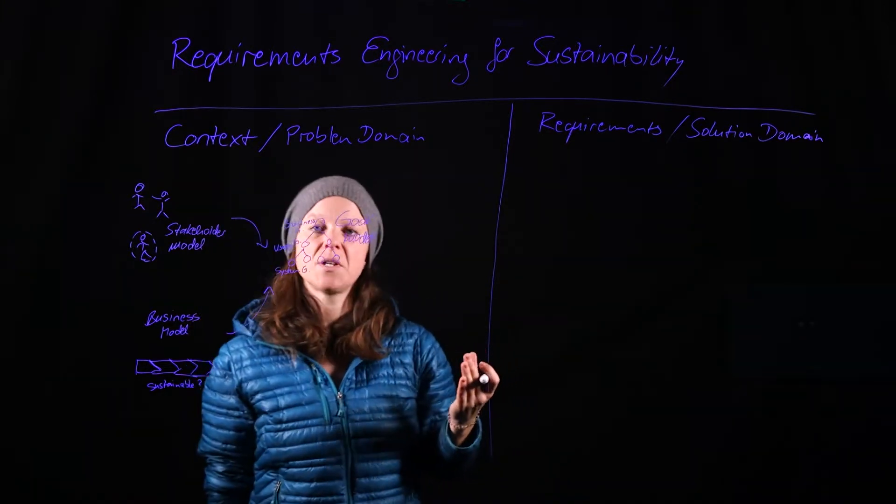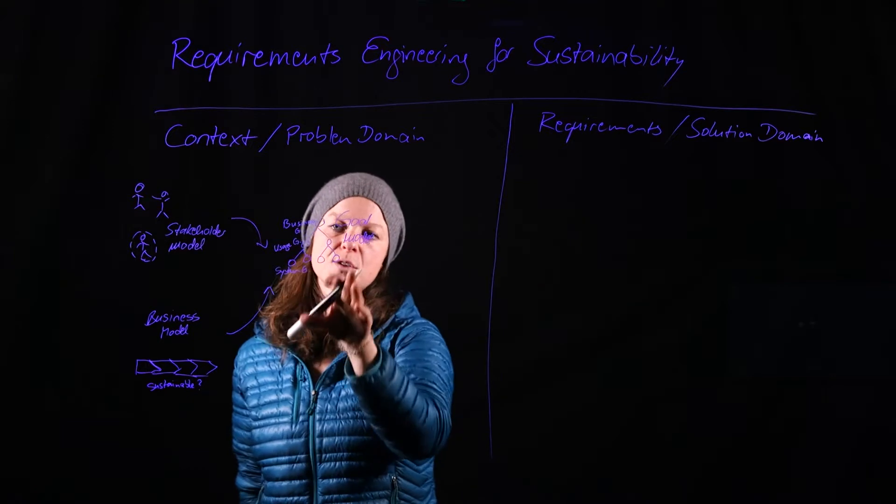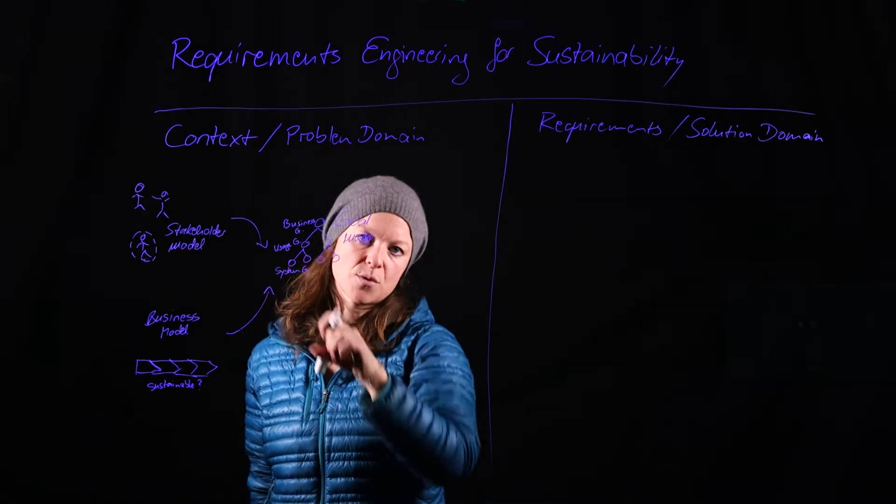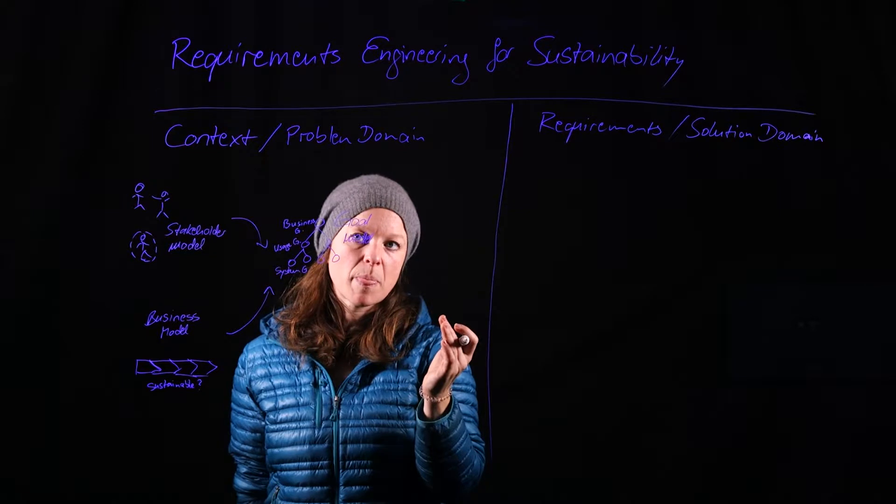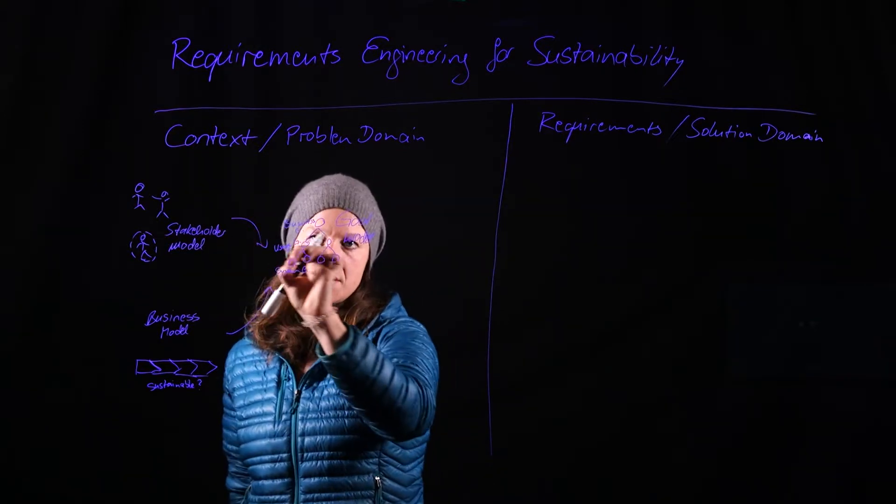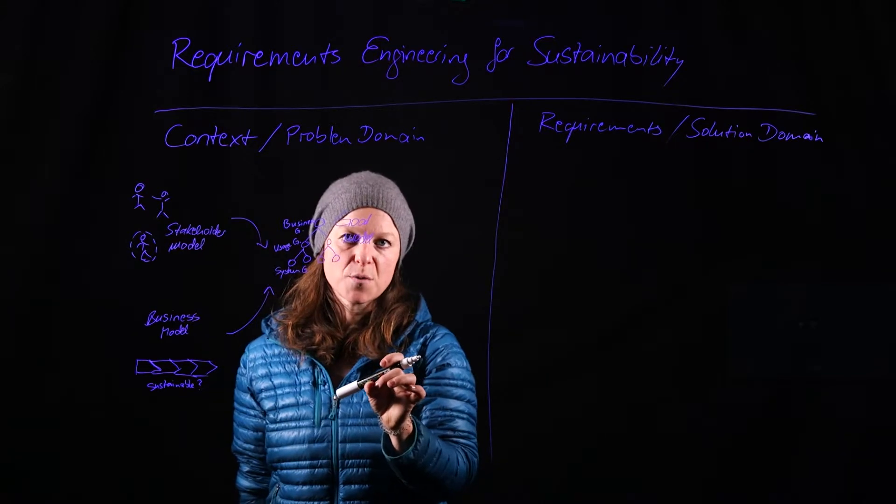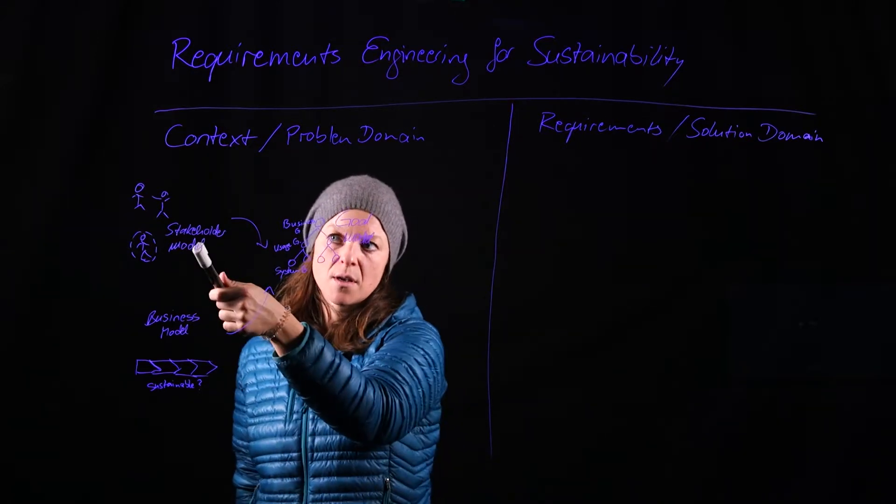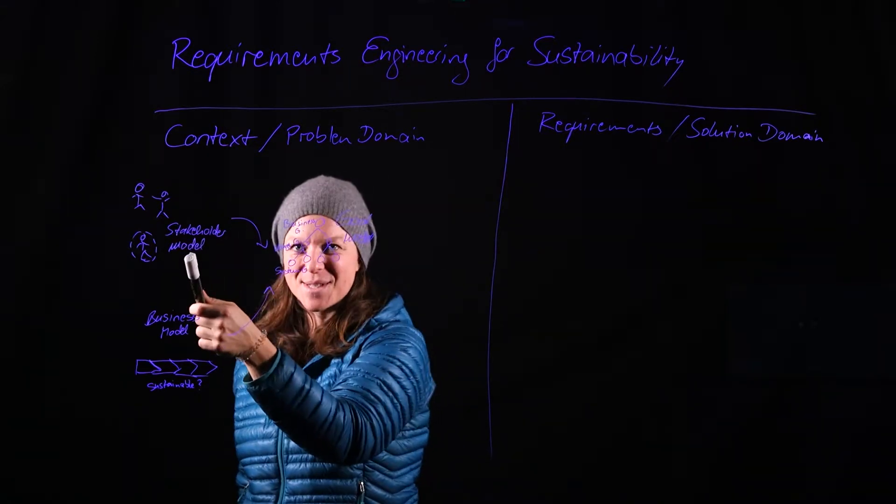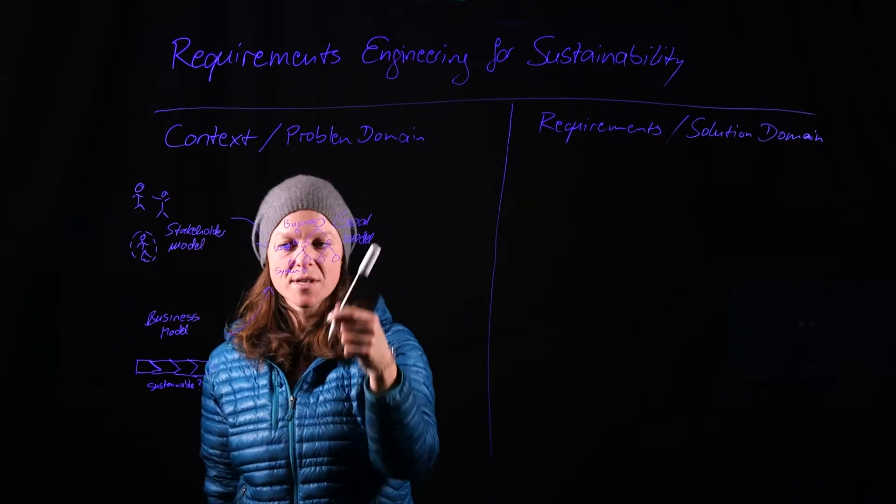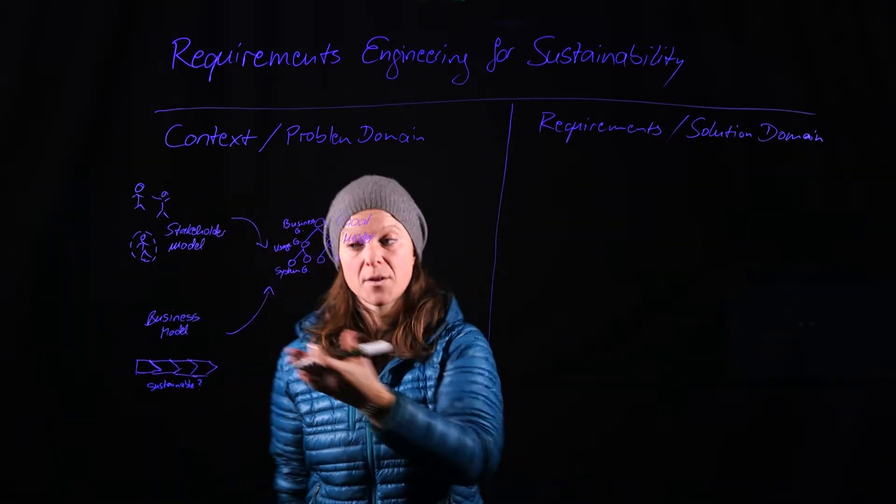And each of them can be decomposed. Some of the goals that you will find in here, specifically as you go down to the lower layer, will also be constraints. If you want to know more in detail about the specific techniques that lead to these individual artifacts, then please go look up the videos in the requirements engineering course on the stakeholders and the goal model and on the business model.